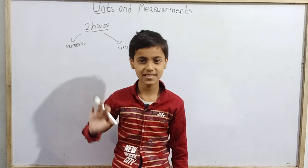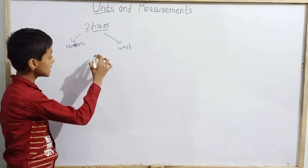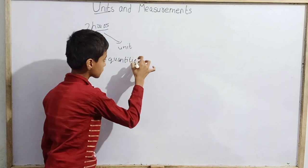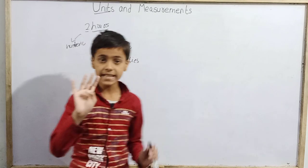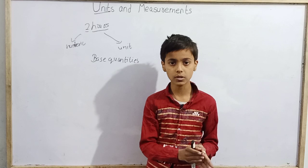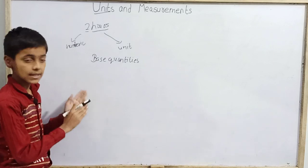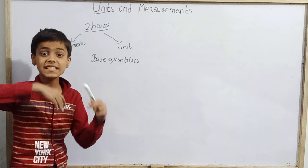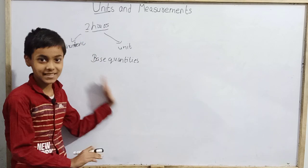That is a very basic quantity. Now, what are fundamental quantities, also called base quantities? In physics we have 7 main quantities that we call fundamental quantities or base quantities. These are the foundation — all other physical quantities can be derived from them.